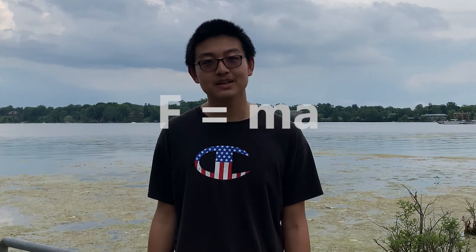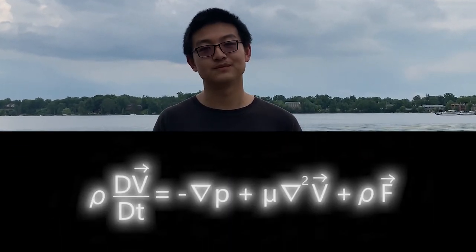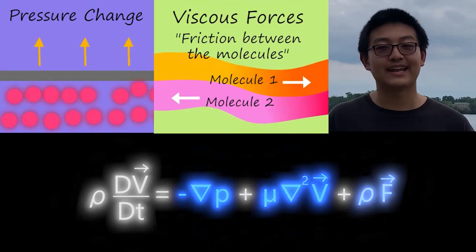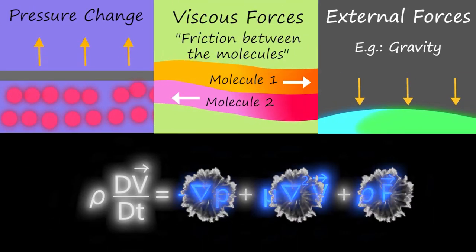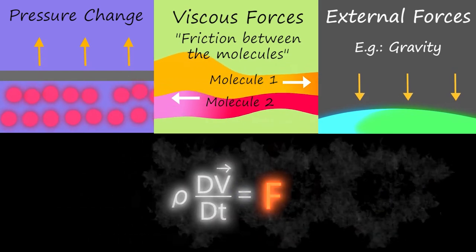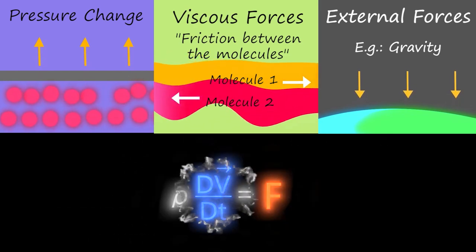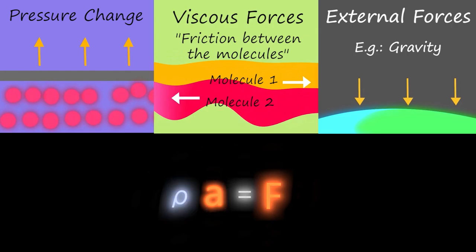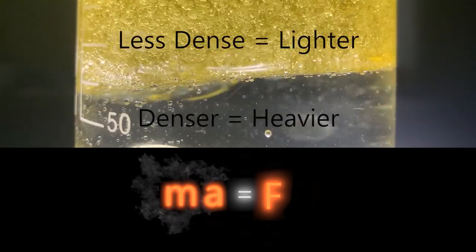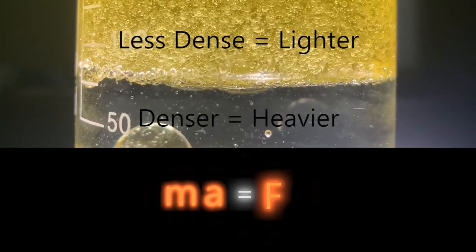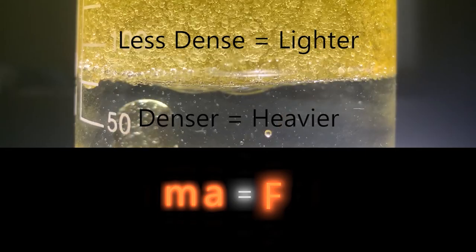Don't believe me? Watch. The sum of pressure change, viscous force, and external force make up the total net force F. With the derivative of velocity over time equaling acceleration and density as a measure of mass in fluids, you can see that the equation is just Newton's second law.